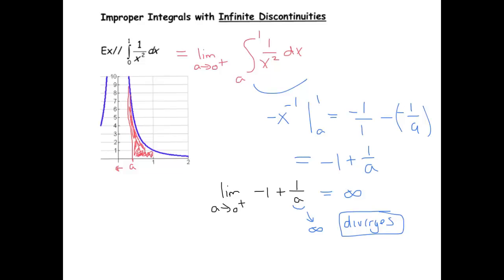I'm going to talk in a later video about functions of the form one over x to the p, because you can get a good understanding of the behavior at a glance if you understand how their graphs behave. For instance, you can see how one over x squared is thinner as x goes to infinity, but it's really fat as y is going to infinity going up the y-axis. We'll look at that in another video.